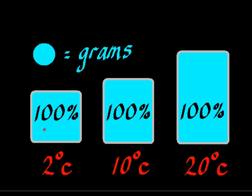Generally, the maximum amount of water which a parcel of air can hold is when it's at a relative humidity of 100%. We can see at the different temperatures the amount of water vapour contained changes with temperature. The light blue colour denotes the amount of water vapour contained in this parcel, measured in grams, which is known as the absolute humidity.